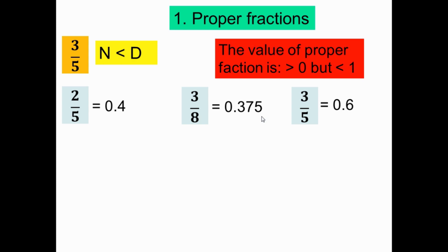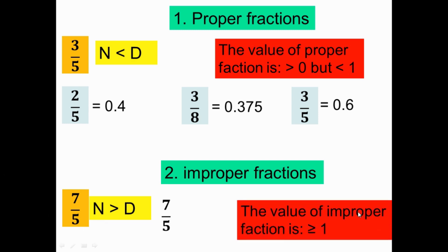Improper fractions, also called top-heavy fractions, have the numerator greater than or equal to the denominator. When you divide using a calculator, improper fractions always give values greater than or equal to 1. For example, 7 over 5 divided equals more than 1.